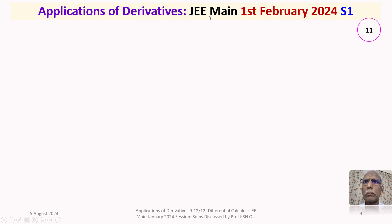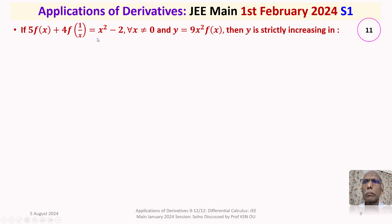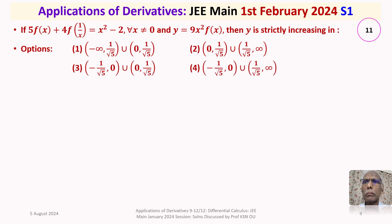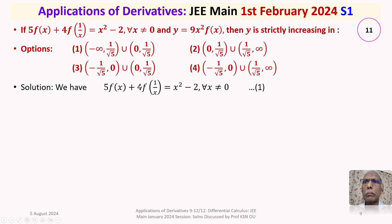This question appeared in the JEE Main exam held on 1st February 2024 in the first shift. The given question is: if 5·f(x) + 4·f(1/x) = x²−2 for all x ≠ 0, and y = 9x²·f(x), then y is strictly increasing in — we are given 4 options, each being a union of two open intervals.